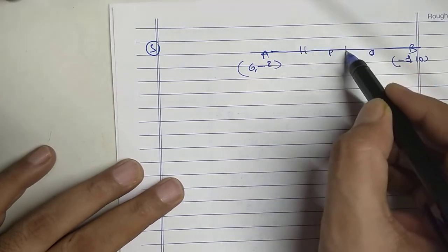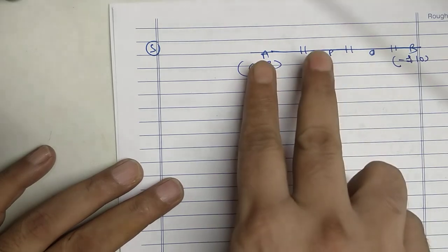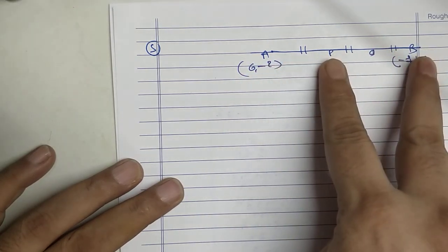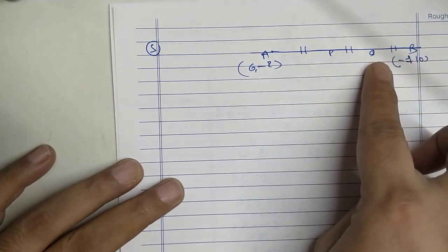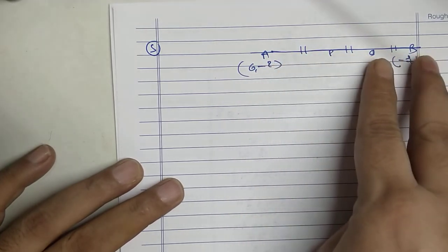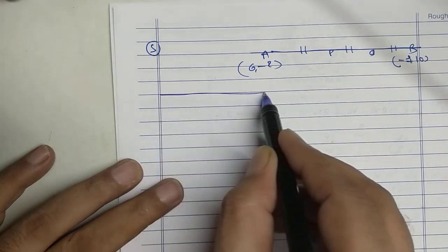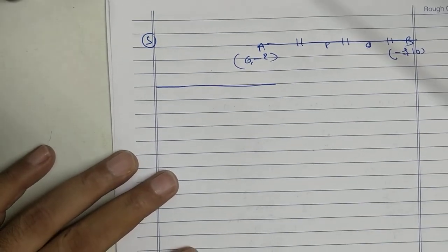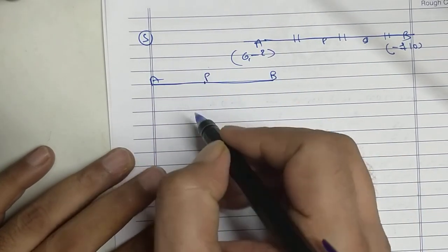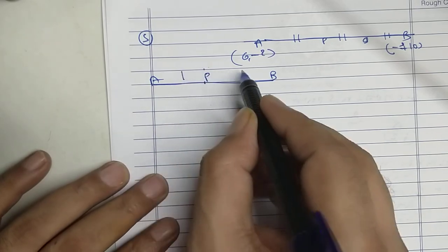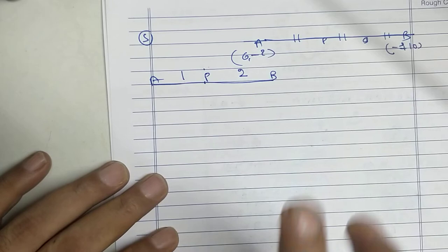One part. Two part. So P divides 1 is to 2. And Q divide 2 is to 1. I will do it separately. A. First take P. P divide in the ratio 1 is to 2. 1 part and 2 part. I hope it is clear now.